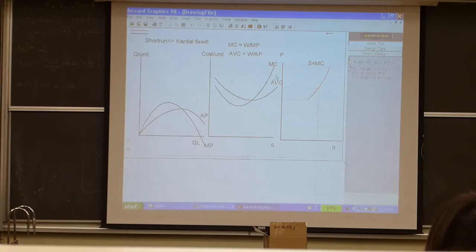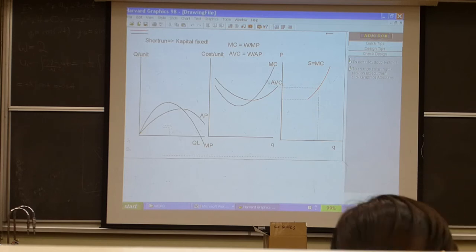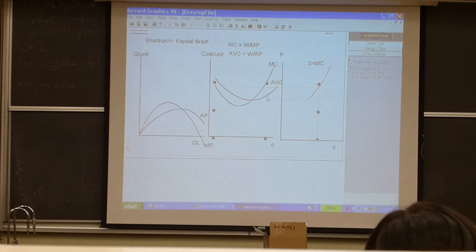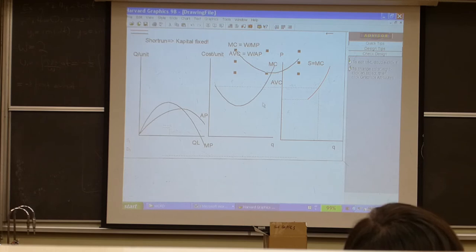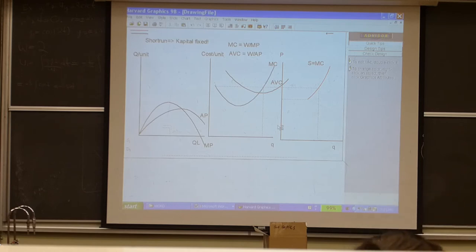The marginal cost function defines the supply function of the firm, not the fixed cost, not the average cost. For example, if the average cost was here, the firm would produce still the same output and would be maximizing profit or minimizing loss. If the average cost function was here, the firm would still produce exactly the same output. The profit maximizing output of the firm has nothing to do with the actual fixed cost. It has only to do with marginal cost.